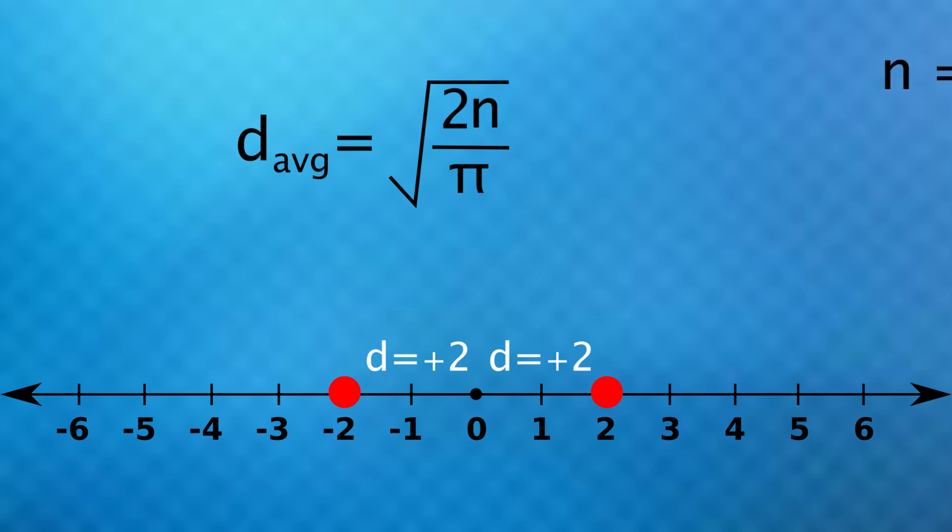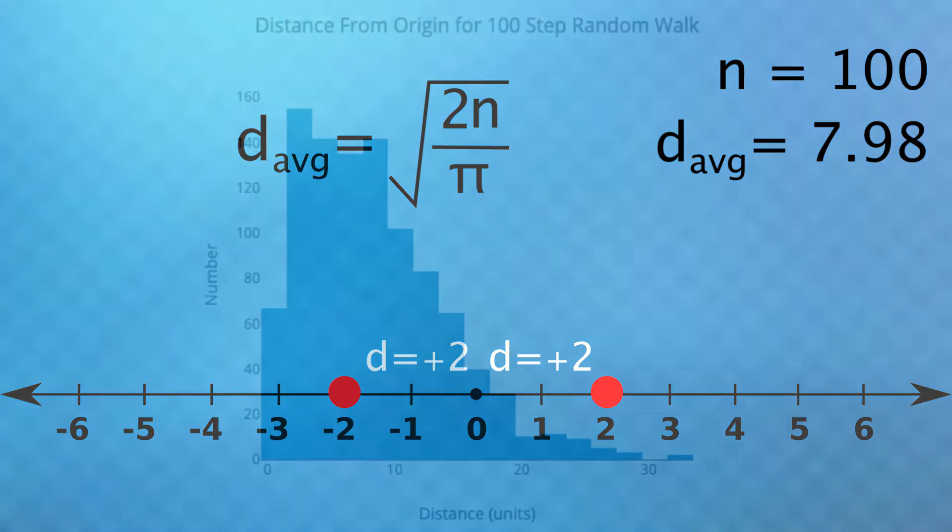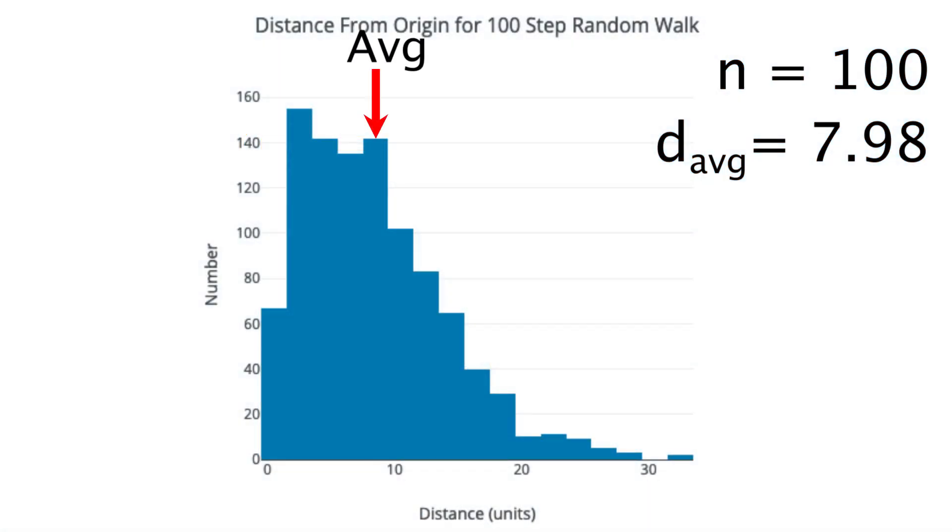So if you took a random walk with 100 coin flips, the expected distance you'd be from the origin at the end is just about 8. If you did many of these 100 step walks, this would be an example of what the distribution might look like in terms of your final distance from the origin.